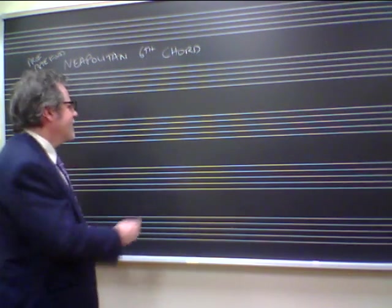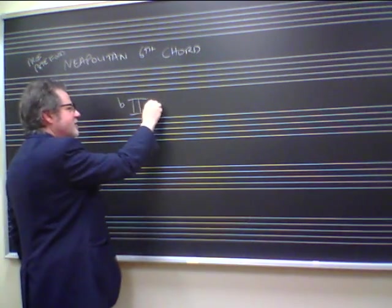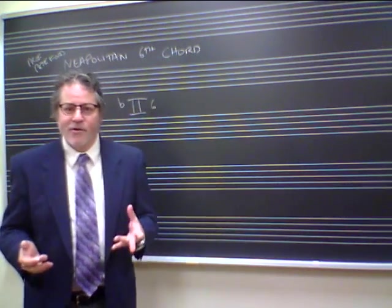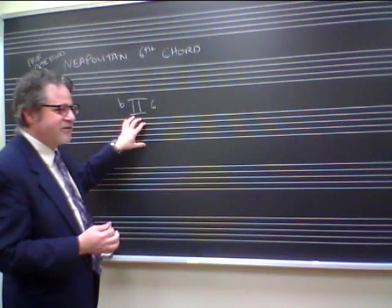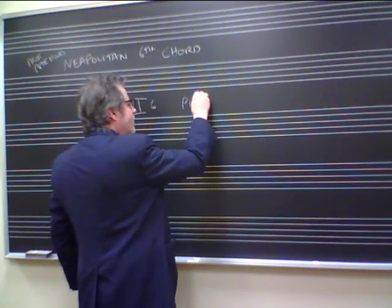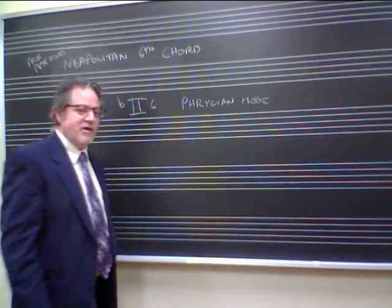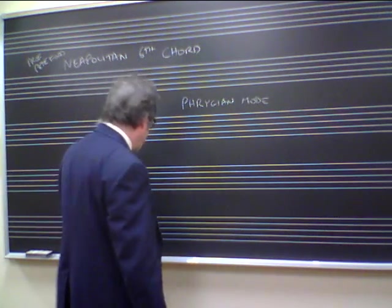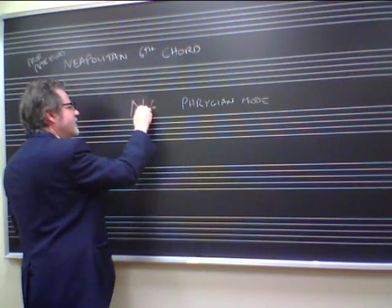Neapolitan 6th chords — a lot of people want to call these flat 2 6th chords, or chords built on the lowered second degree of either the major scale or the minor scale. But this isn't something we really want to condone. We do want to say it is borrowed from the Phrygian mode. It's a major chord built on the lowered second degree of the scale. Instead of flat 2 6th, we call this the N6th — the Neapolitan 6th.